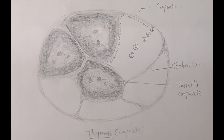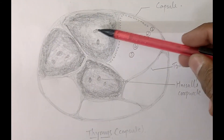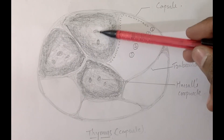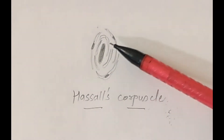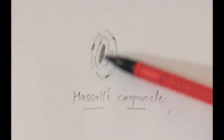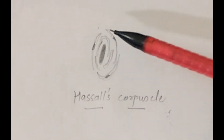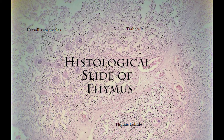Now we will discuss the unique feature of the thymus: Hassall's corpuscles. In this diagram, in the paler medulla, these structures present are Hassall's corpuscles. They are small rounded structures. Each corpuscle has a central core formed by epithelial cells, which form a pink-colored hyaline mass in the center, and around this mass there is a wall formed by epitheliosites. The functional significance of Hassall's corpuscles is not yet fully understood.